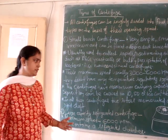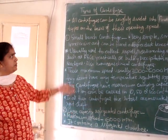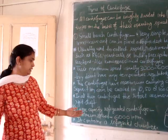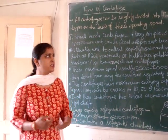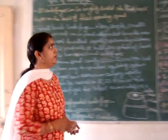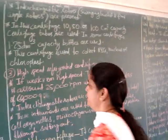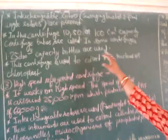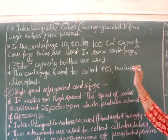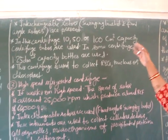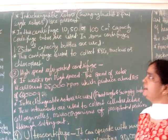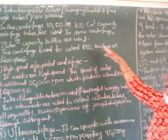The second type is the large capacity refrigerated centrifuge. Their maximum speed is the same as the small bench centrifuge, but it contains a refrigerated chamber which maintains the temperature. One more difference is that their rotors may be interchangeable — that is, swinging bucket and fixed angle rotors are both present.